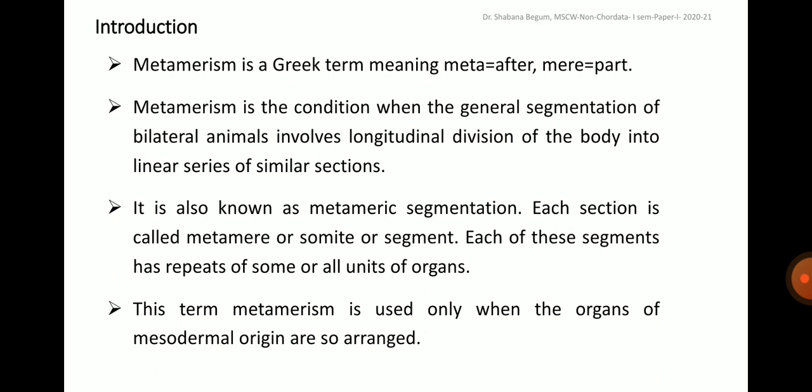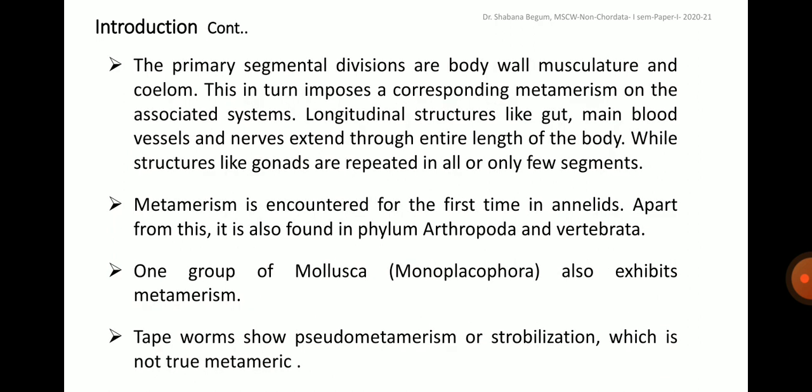This term is used only when the organs of mesodermal origin are so arranged. The primary segmental divisions are body wall, musculature and coelom. This in turn imposes a corresponding metamerism on the associated systems. Longitudinal structures like the gut, main blood vessels and nerves extend through the entire length of the body, while structures like gonads are repeated in all or only a few segments.